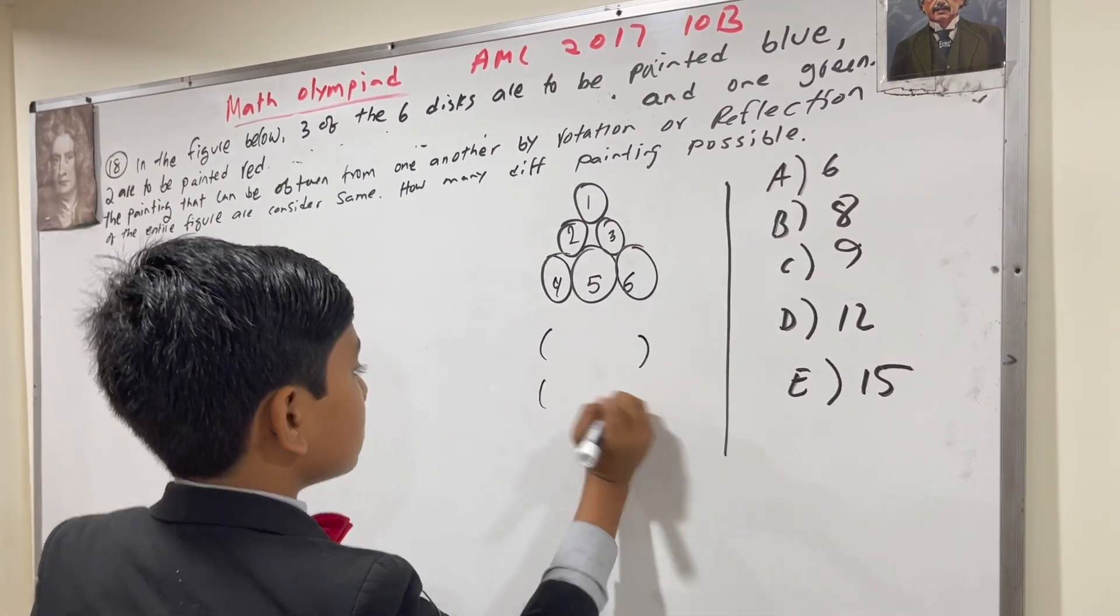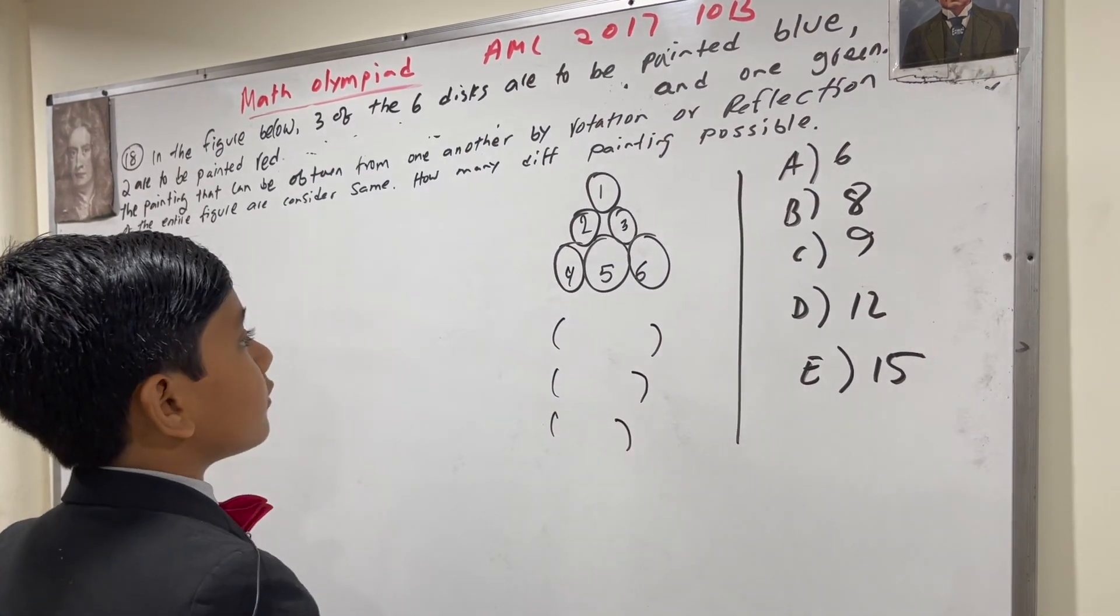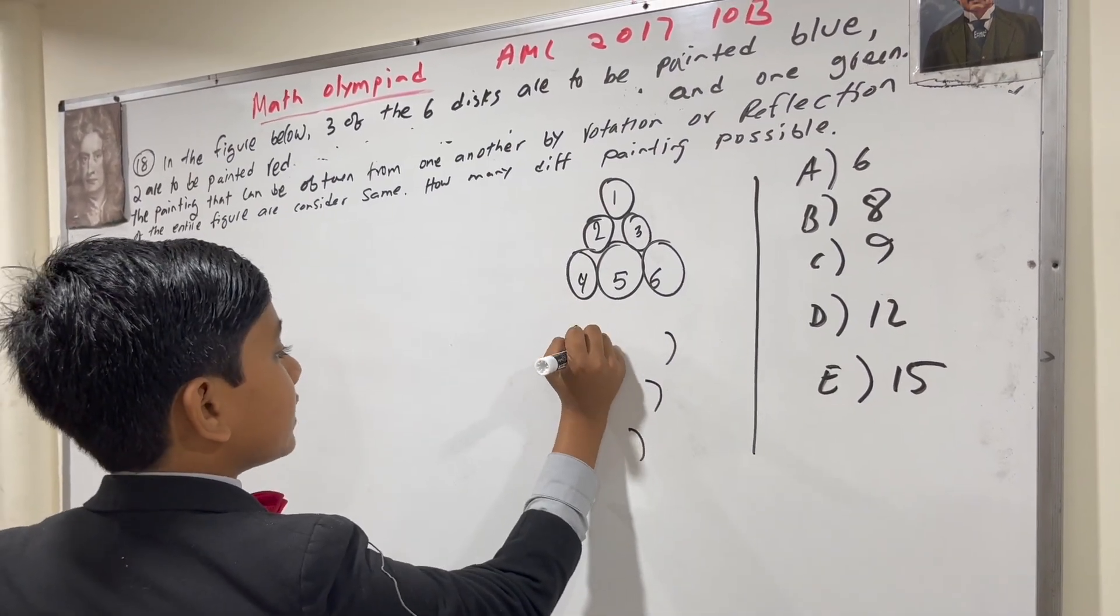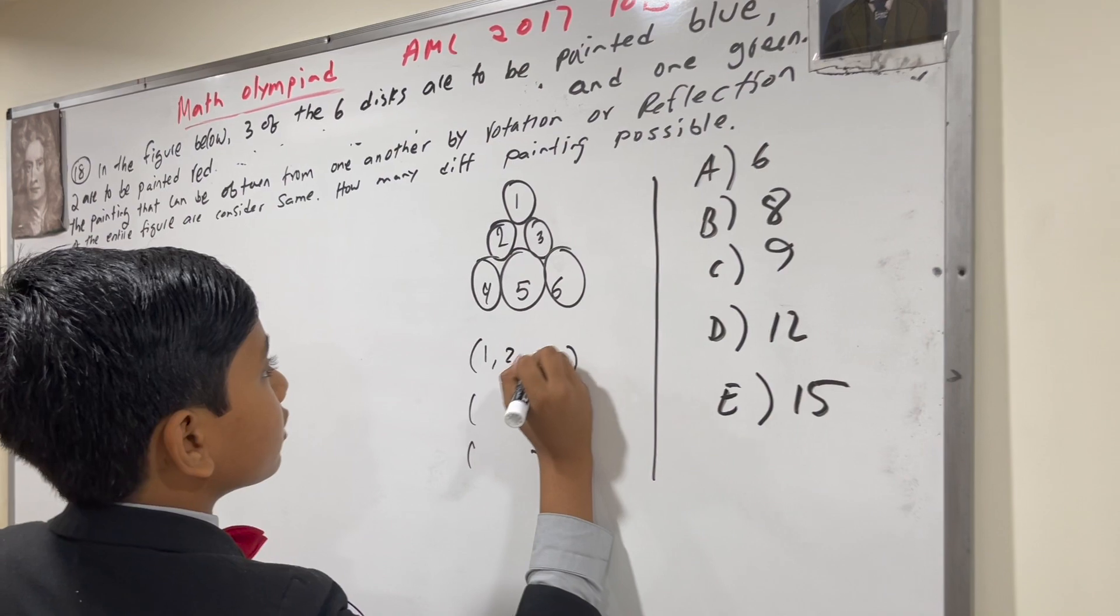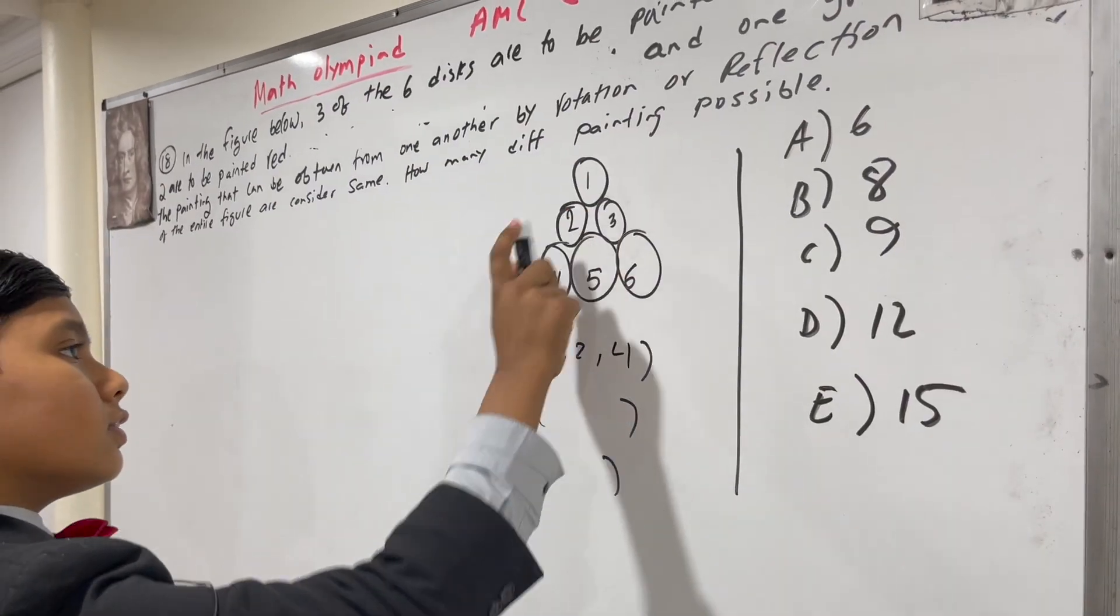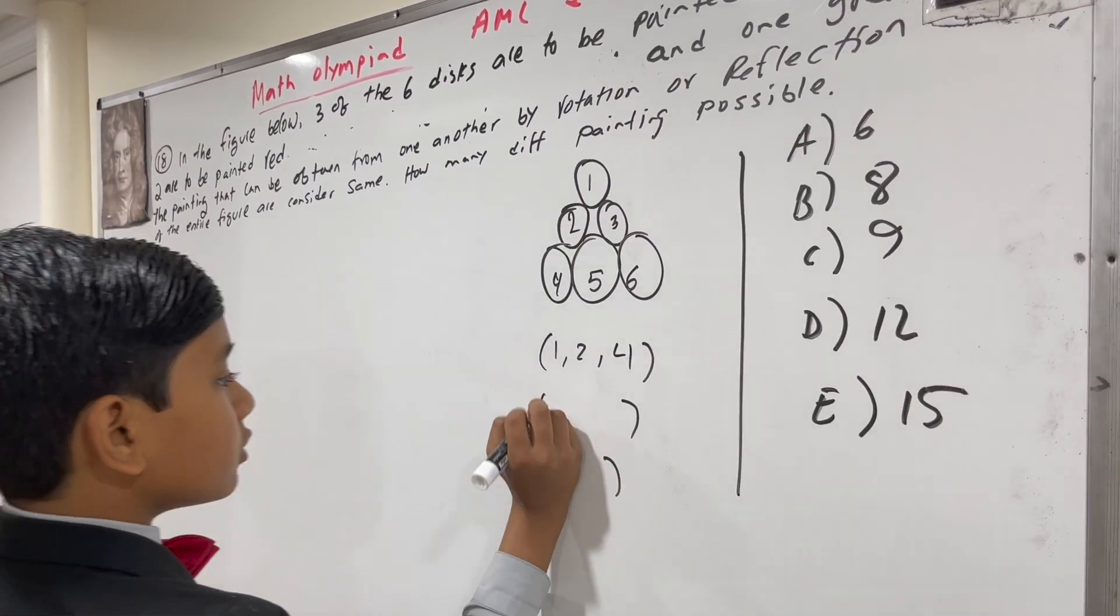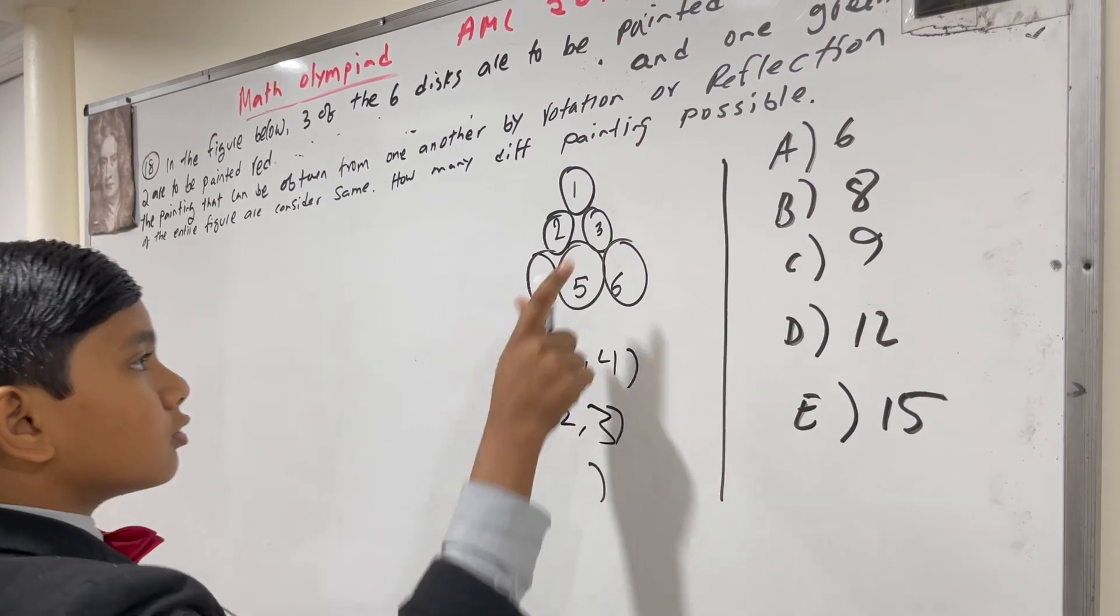So now, first of all, you could have the discs arranged 1, 2, 4. So, like this. Second of all, you could have them arranged 1, 2, 3.